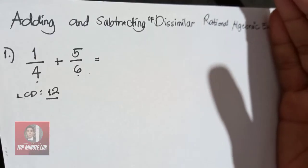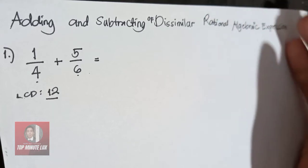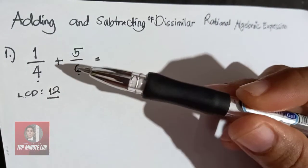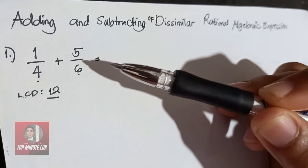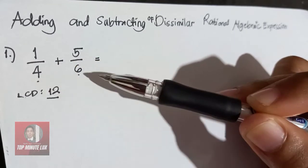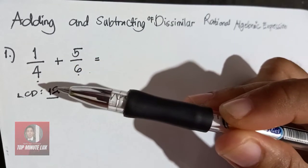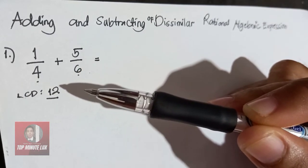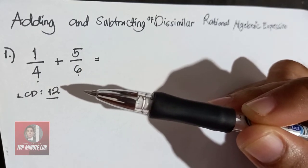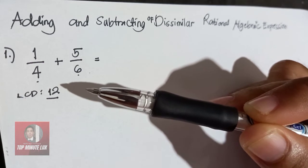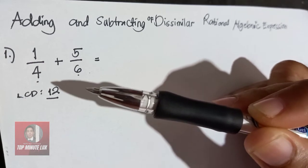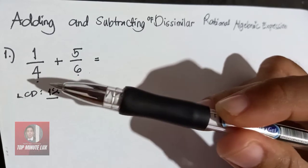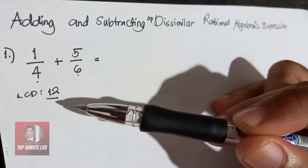Adding and subtracting of dissimilar rational algebraic expressions. Example number 1: 1/4 plus 5/6. Since they have different denominators, we need to find the LCD. You can check the description box for the link to the video on finding the LCD. The LCD of 4 and 6 is 12.